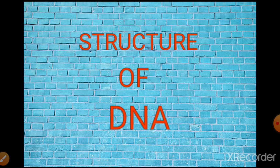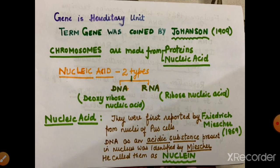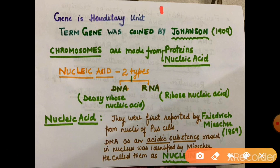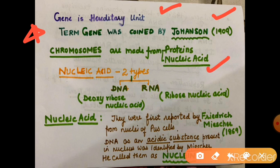Because chromosomes are both DNA and proteins, in the next lecture we will discuss why DNA is the genetic material and why not protein. We will know that gene is the hereditary unit. Mendel did not use the gene word — he used the word 'factor'. But the term gene was coined by Johansson in 1909 — this is a very important objective question. Chromosomes are made from proteins and nucleic acids. There are two types of nucleic acid: DNA and RNA. DNA's full form is deoxyribose nucleic acid and RNA is ribose nucleic acid.